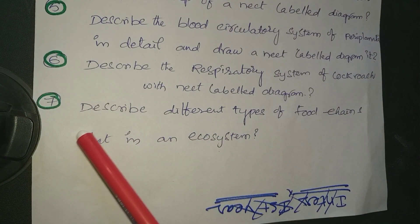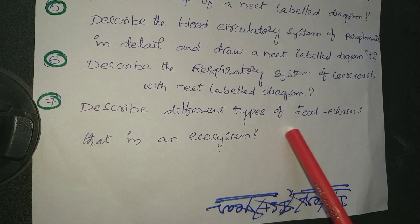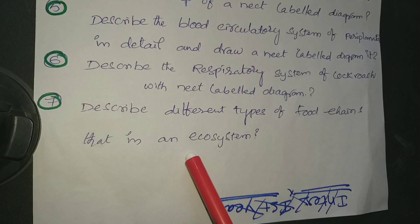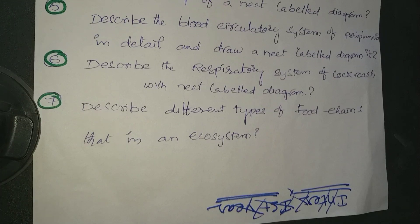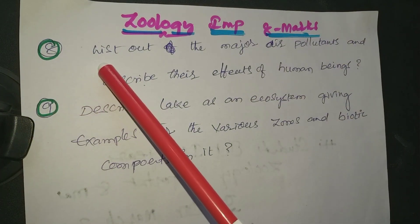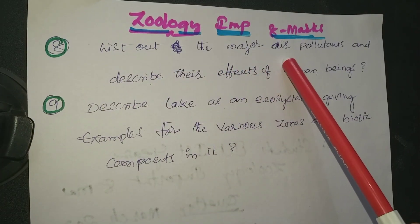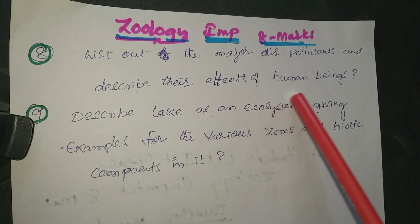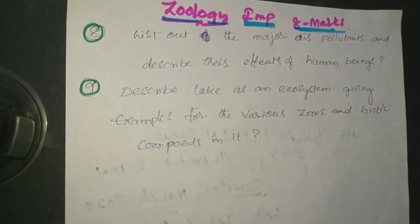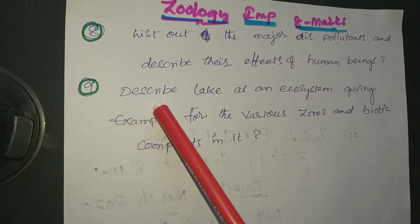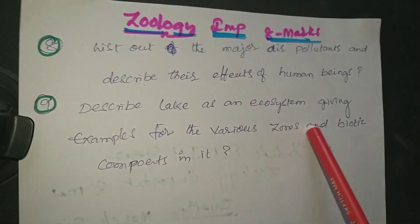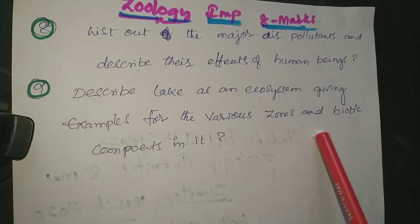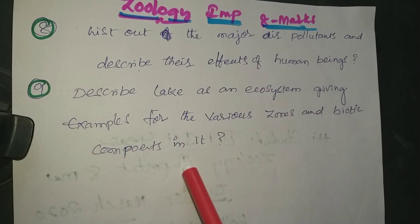7th question: Describe different types of food chain in an ecosystem. 8th question: List out the major air pollutants and describe their effects on human beings. 9th question: Describe the lake as an ecosystem, giving examples for the various zones and biotic components in it.